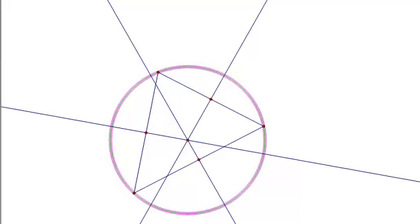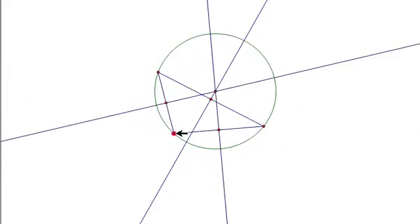Sometimes that point is outside of the triangle, sometimes inside, or even on it — like right here — but it's always one point. That point has a special name: it's called the circumcenter. The reason it's called the circumcenter is because that point where all the perpendicular bisectors meet is actually the center of a circle that goes through all three vertices of the original triangle, which I'm going to construct right now. As I move this triangle around, this circle always goes through all three points.